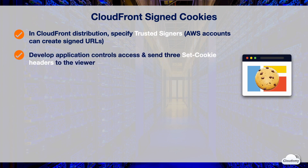You need to develop your application to determine whether a user should have access to the content. If so, send three Set-Cookie headers to the viewer. Each Set-Cookie header can contain only one name-value pair. A CloudFront signed cookie requires three name-value pairs. You must send the Set-Cookie headers to the viewer before the viewer requests your private content.